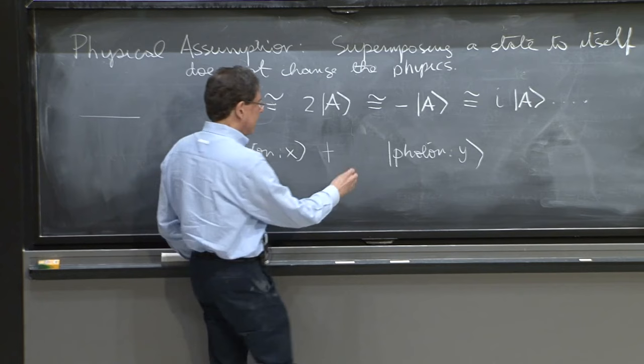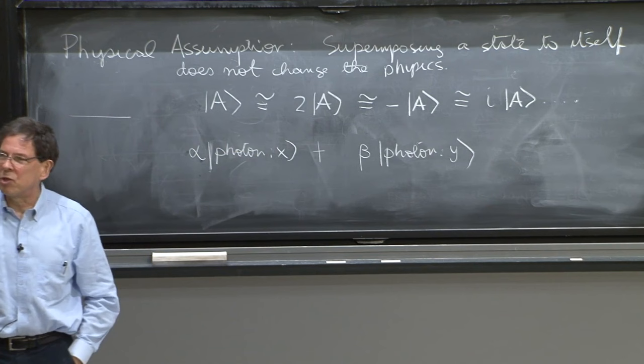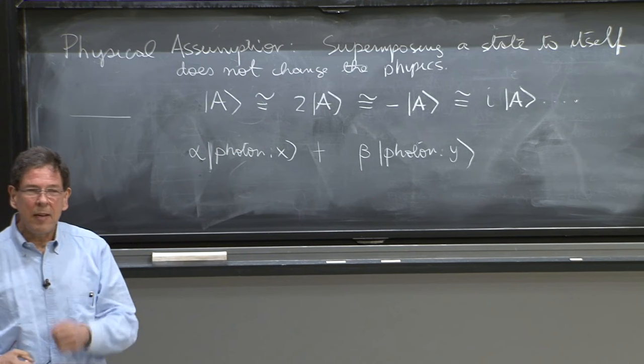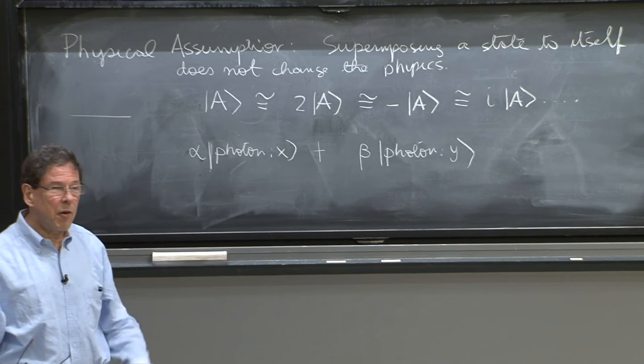Now, suppose I decide to superpose those states to create the most general photon state. I would have an alpha, which is a complex number here, and a beta there. And I would say, here is my most general photon state. And how many parameters does this state have? It has two complex parameters, alpha and beta, and therefore four real parameters.